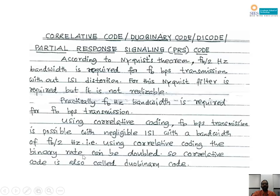Using correlative coding, the binary rate can be doubled. Without correlative coding, for transmitting Fb bits per second, Fb Hz bandwidth is needed. But with the help of correlative coding, Fb bits can be transmitted per second with a bandwidth of Fb/2 Hz. So for a given communication channel, double the bit rate can be achieved. That is why correlative coding is also known as duo binary code. I will explain the reason the code is known as correlative code.